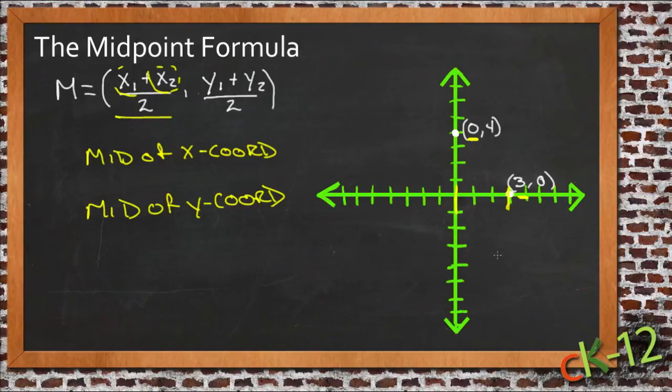Well, for our example, 0 plus 3 over 2, well that's 3 divided by 2, right? It's equal to 3 halves or 1 and 1 half. That tells us that the average x coordinate would be right here, so the middle of those two lines is right here on the x coordinate.